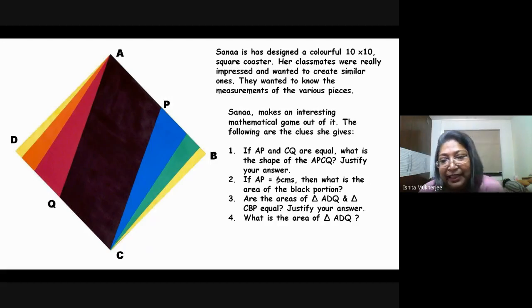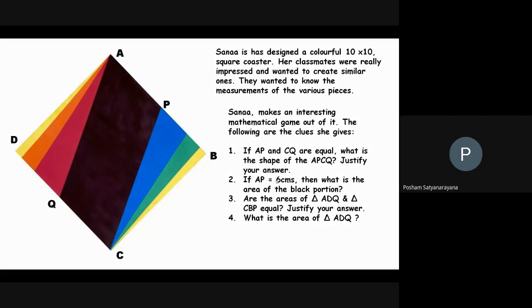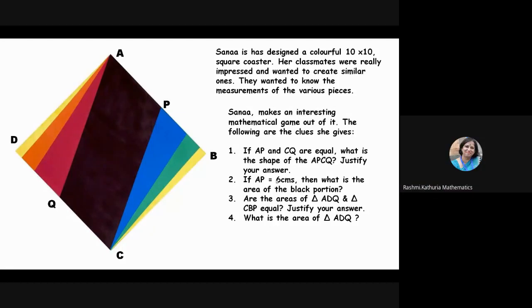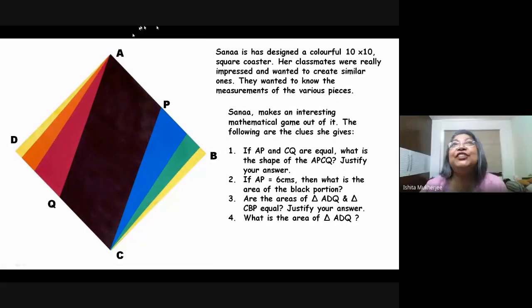So the first question is, if AP and CQ are equal, what is the shape of APCQ? Parallelogram, yes, great. But you need to justify your answer. Since it is a square, it's obvious. Opposite sides are equal and parallel. Very good. Opposite sides, which in case means AP and CQ are equal as well as parallel, being opposite sides of a square. Therefore, it is a parallelogram. First question done.